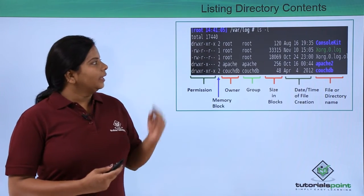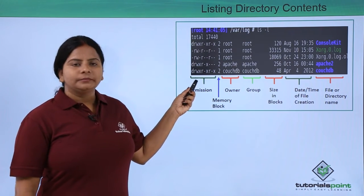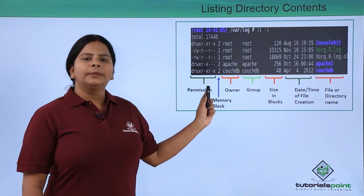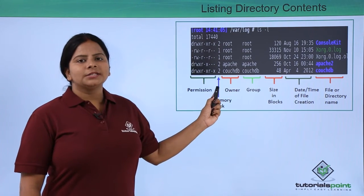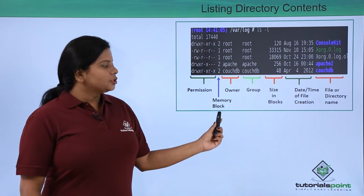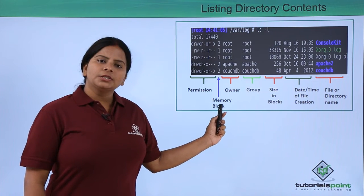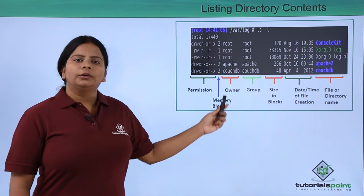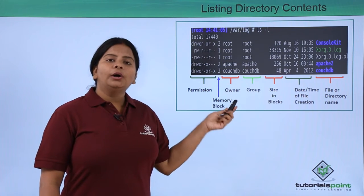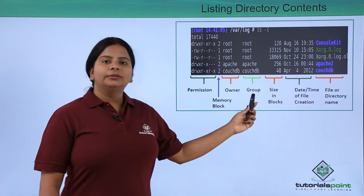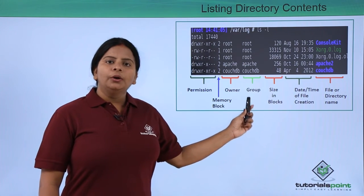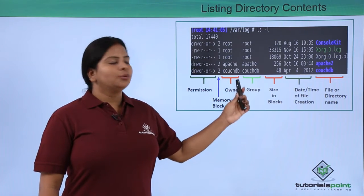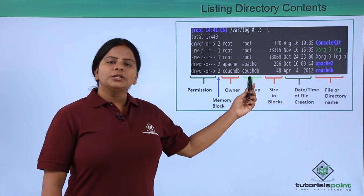Using LS -L, you can see it first lists permissions — showing permissions for the user who created the directory, as well as groups and public users. Next is the memory block number, which stores your data in memory and provides a memory block number. Then there is the owner column, showing who created or owns the directory or file. The group column shows which group the owner belongs to, and users in that group get the assigned permissions.